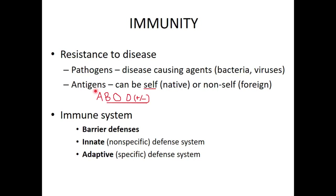You were already introduced to immune responses when we discussed blood typing — mixing anti-A antibodies with type A blood caused agglutination, which is an antigen-antibody immune response creating a clumping of cells. The benefit is that it slows down whatever is considered non-self or foreign, inhibiting its ability to move around and giving the body time to break it down. We'll talk more about that with the complement system.